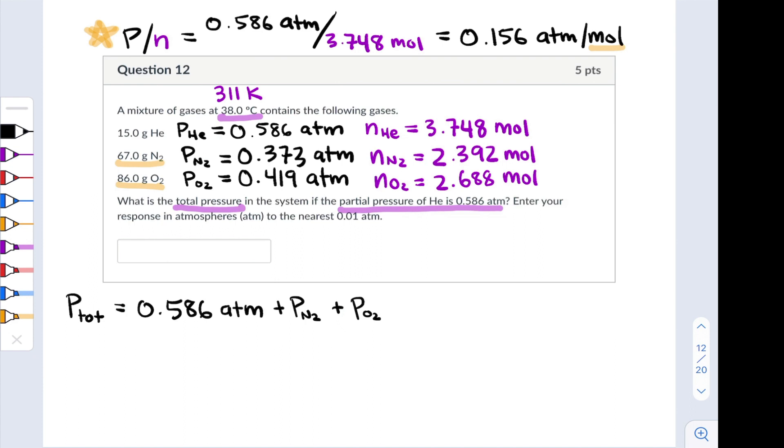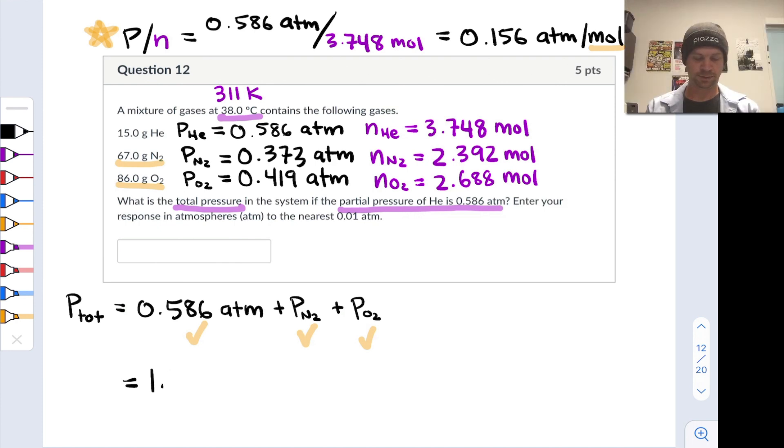Now we've got the partial pressure of N2, the partial pressure of O2, and the given partial pressure of helium. We can simply add these three to find the total pressure of gases in the mixture, which comes out to 1.378 atmospheres.